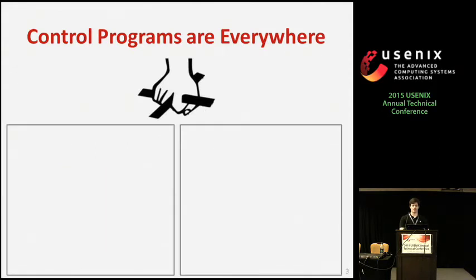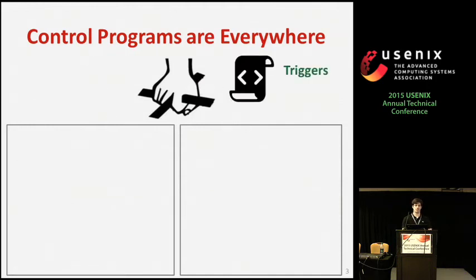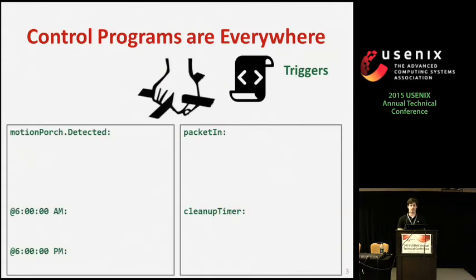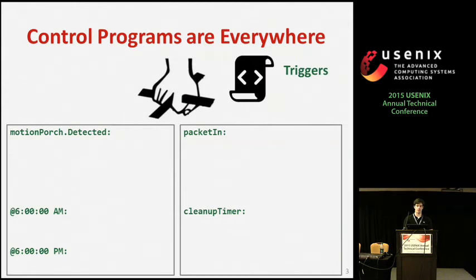The scripts running on these centralized controllers tend to have a similar event-driven structure. There's typically a set of triggers — events that occur in the real world — such as a light being switched on, motion being detected, or a packet arrival. It can also be something like the time of day or a timer firing.